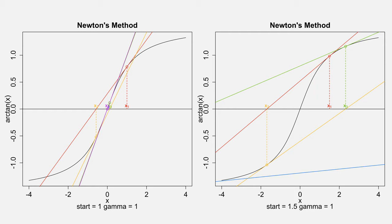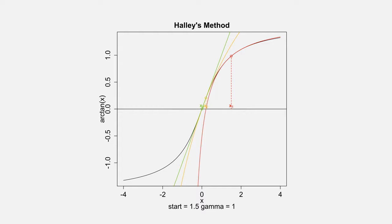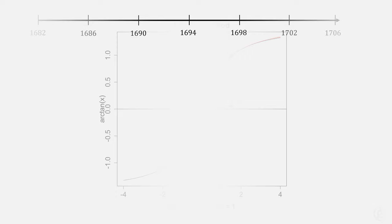Recall that with Newton's method, we used tangent lines to approximate our next point. Halley's method does something different. We instead used tangent hyperbolas, but first let's go back in time.